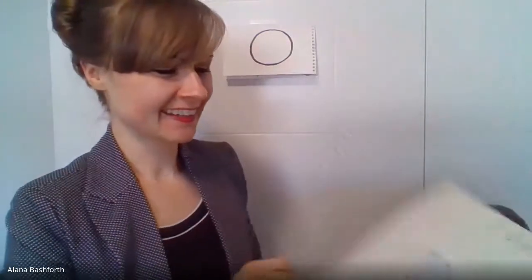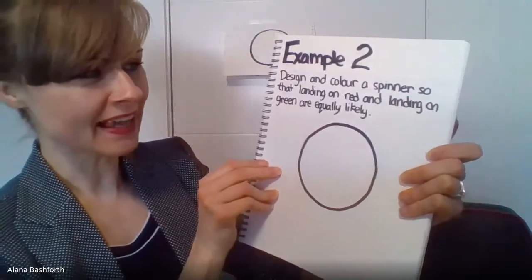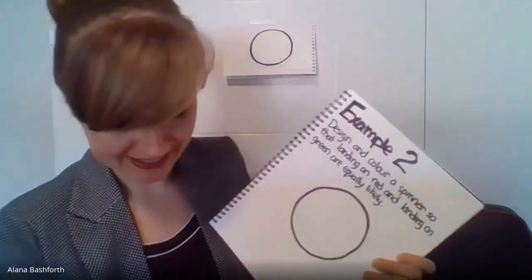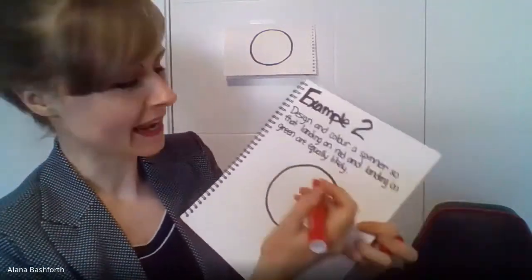Okay, so next one is: design and color a spinner so that landing on red and landing on green are equally likely. And this is gonna be super easy. So I'm gonna forget about blue and I'm just gonna draw a line down the center.